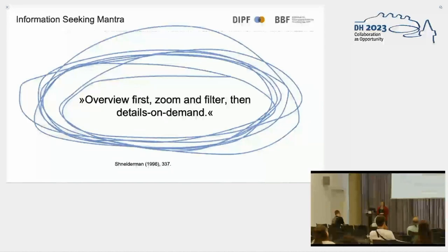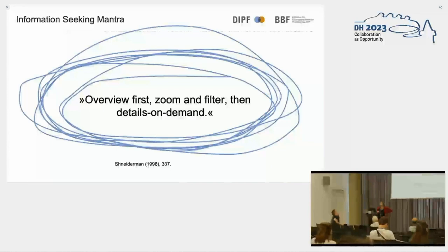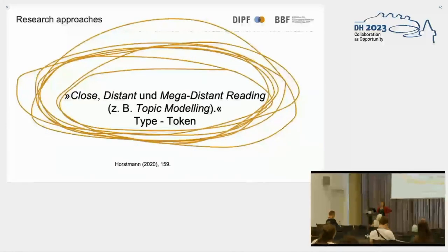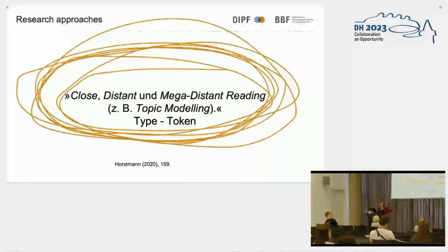How do you create visualizations? There is a quite famous information seeking mantra from Ben Shneiderman: you should provide an overview first, then interactively zoom and filter the objects, and then offer details on demand. Most contemporary visualizations more or less follow that principle. This mantra can be translated into research methods — proper visualizations used in research should be approached by close, distant, and mega-distant reading methods, for instance in topic modeling. They offer types by recognizing patterns in the data, as well as individual singular objects.